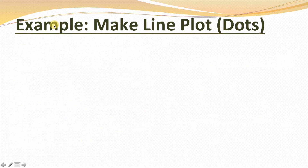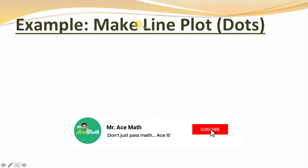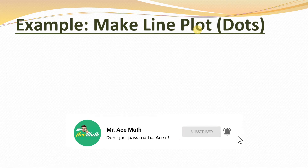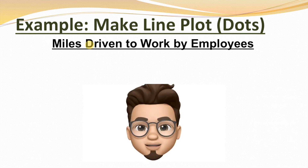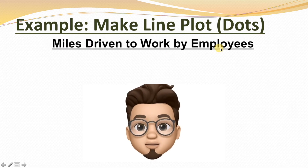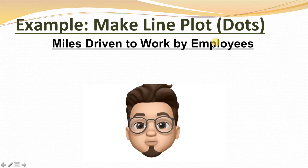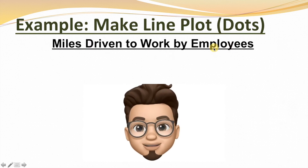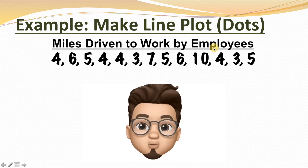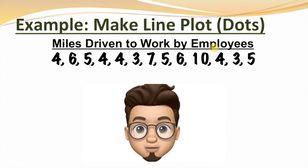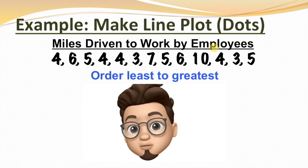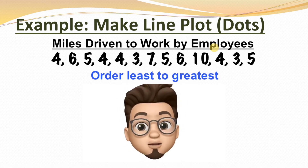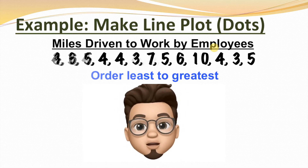Here's our next example. For this example, we're going to make a line plot, but instead of using x's like our last example, we're going to use dots this time. Here we have a set of data telling us the number of miles driven to work by employees. As we look at the data, the numbers aren't in order, so the first thing we should do is put them in order from least to greatest. When we do, they'll look like this.